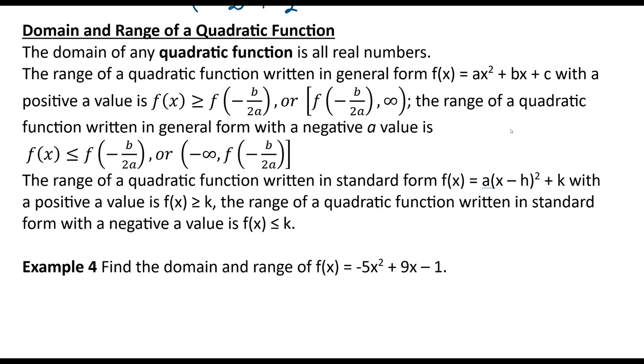The range, however, is what's going to be different. So the range of a quadratic function written in the form f(x) = ax² + bx + c with a positive a value, so it's opening up, is going to be from the vertex on up. So what we want to do is find the y value for the vertex and that's the low point. It's going to go from that on up.